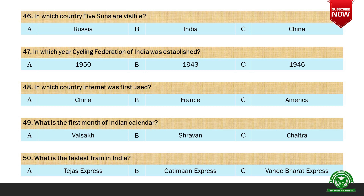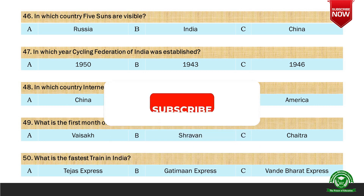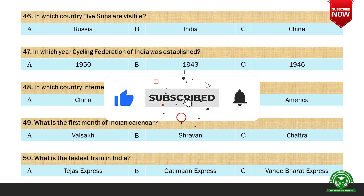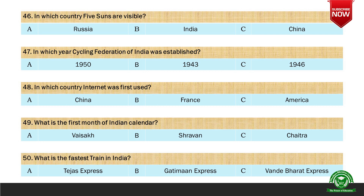Next question: In which country was the Internet first used? Options are A. China, B. France, and C. America. And the correct option is C. America.